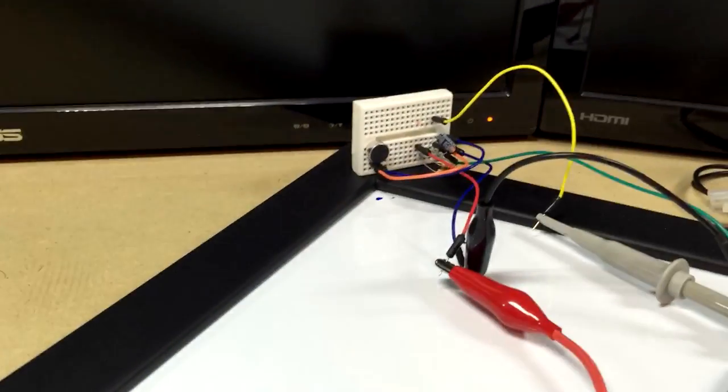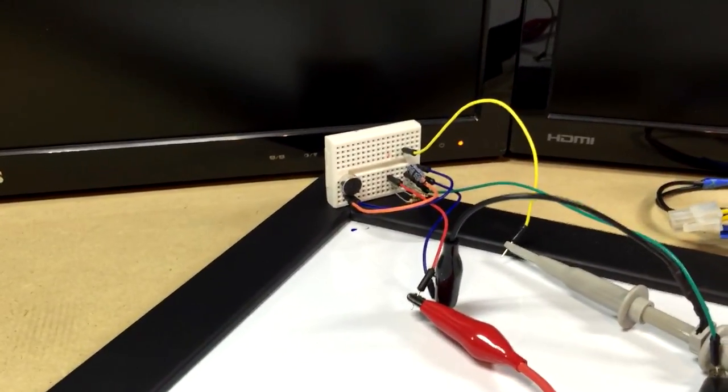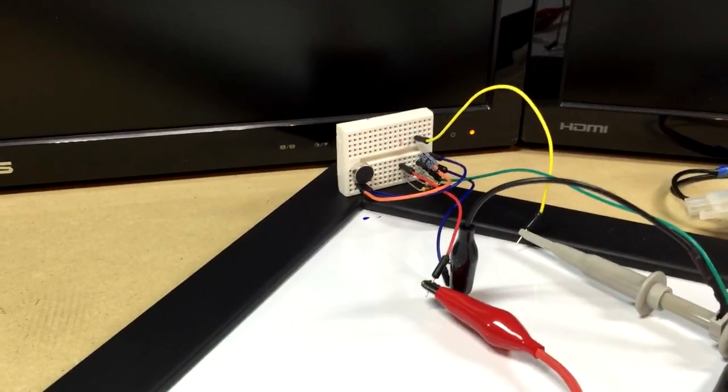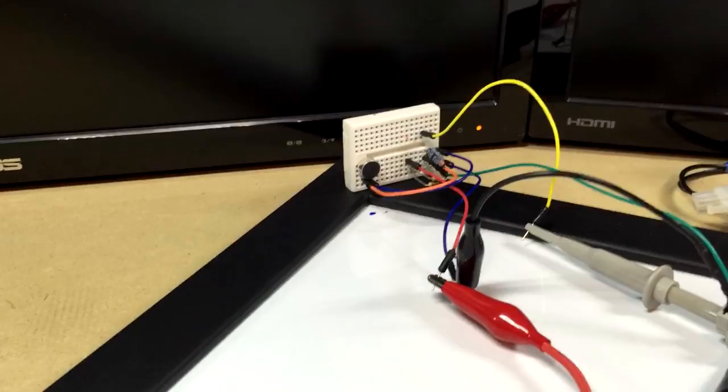All I used were just two regular old electret microphones. They weren't on breakout boards or anything. I put them in a little mini breadboard. The way I connected them: ground went straight to ground, the output went through 5k worth of resistance up to VCC, which in this case is 12 volts.